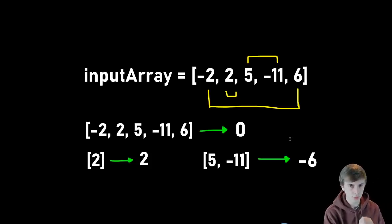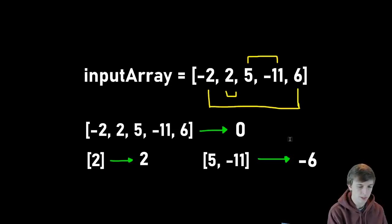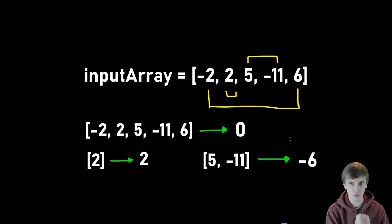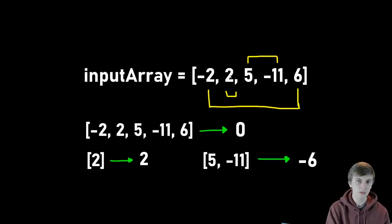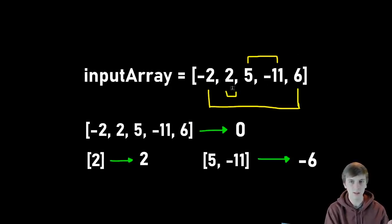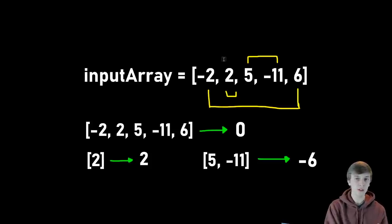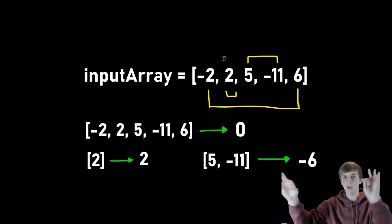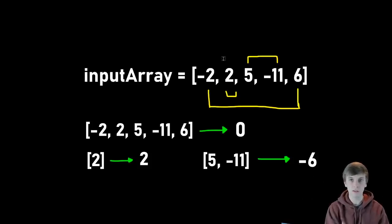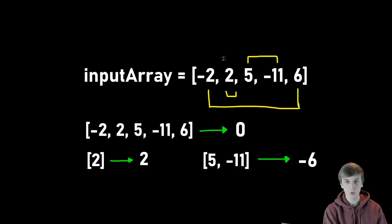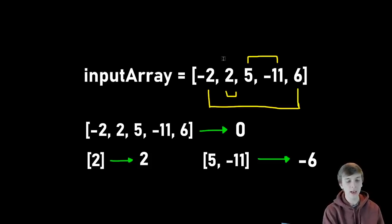One property of the subarrays we're dealing with is that all of the elements have to be next to each other. So it can't be two and six — it has to be two, five, negative 11 and six, or just two and five. The elements just have to be next to each other. We can't be pulling elements from all over the array. They have to be contiguous. So we're looking for the maximum sum we can get from a contiguous subarray.